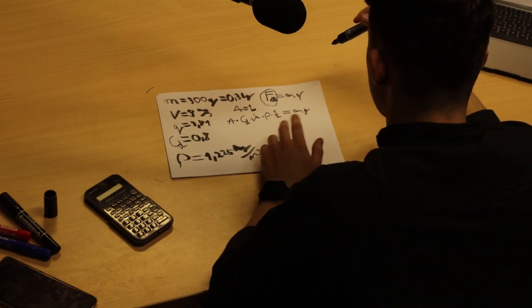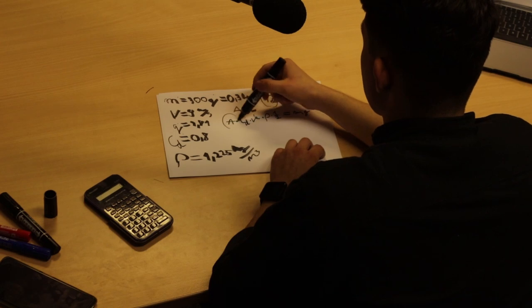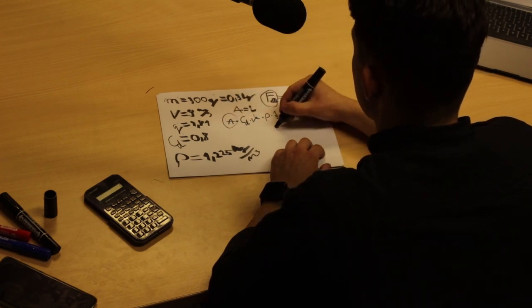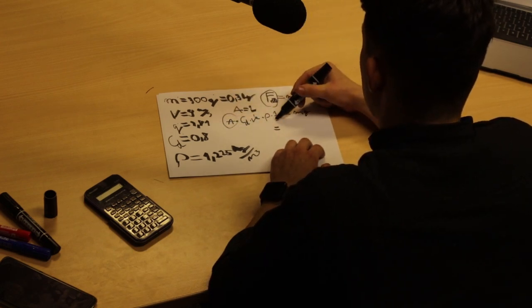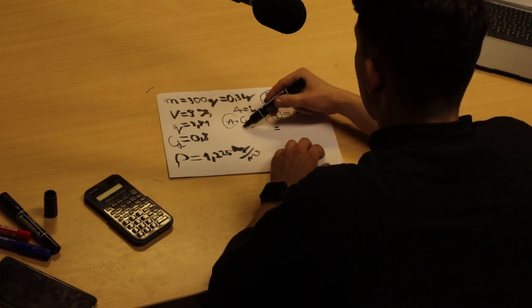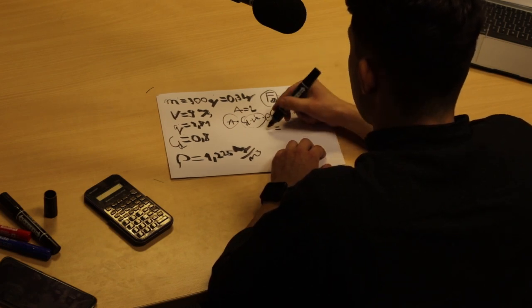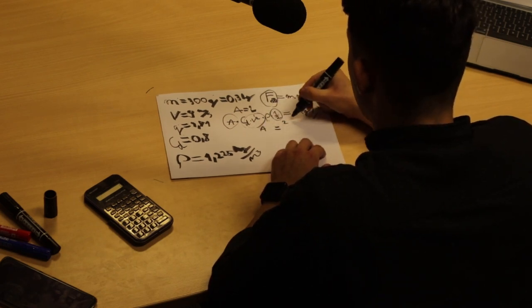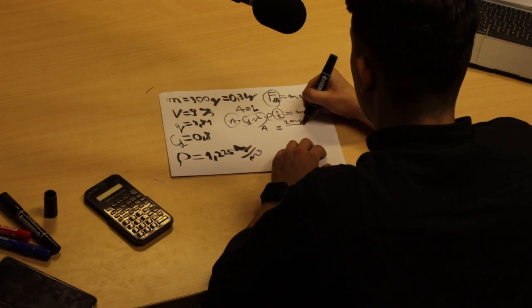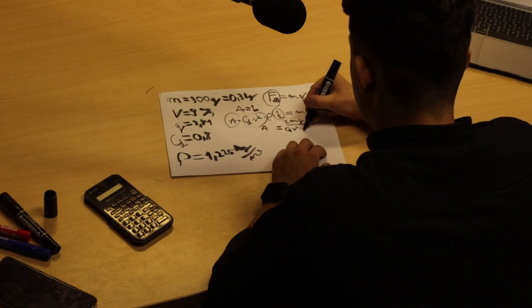Ez lesz egyenlő az m szor g-vel, és innentől ez egy szimpla egyenletmegoldás, ahol az A-t akarjuk megtudni, szóval őt kifejezzük. Beszorzunk kettővel, a többiekkel pedig le fogunk osztani, és így az A-t megkapjuk: kétszer m szor g per c_d szor v négyzet szor a ró. És akkor mindezt megnézhetjük számokkal is.